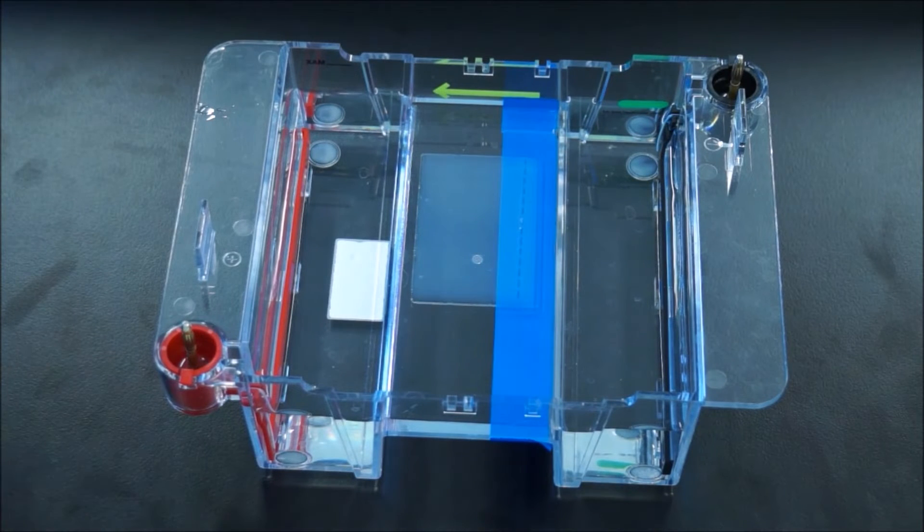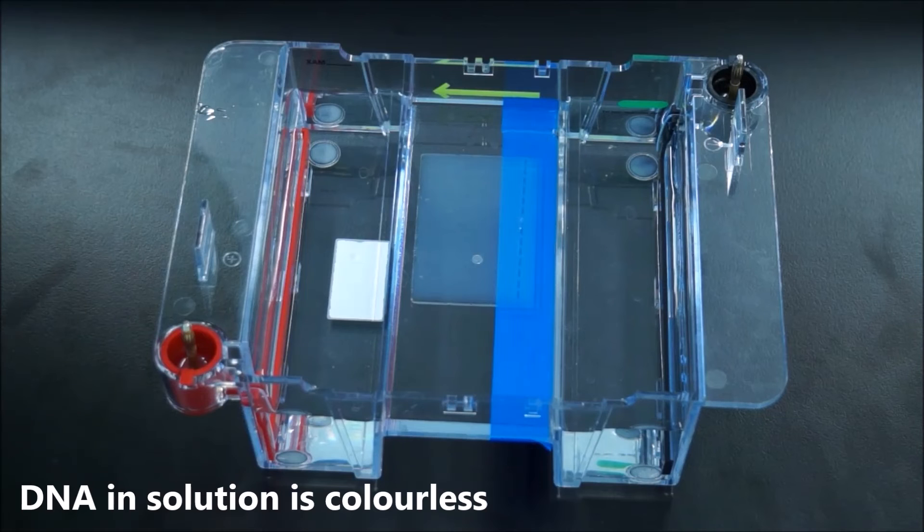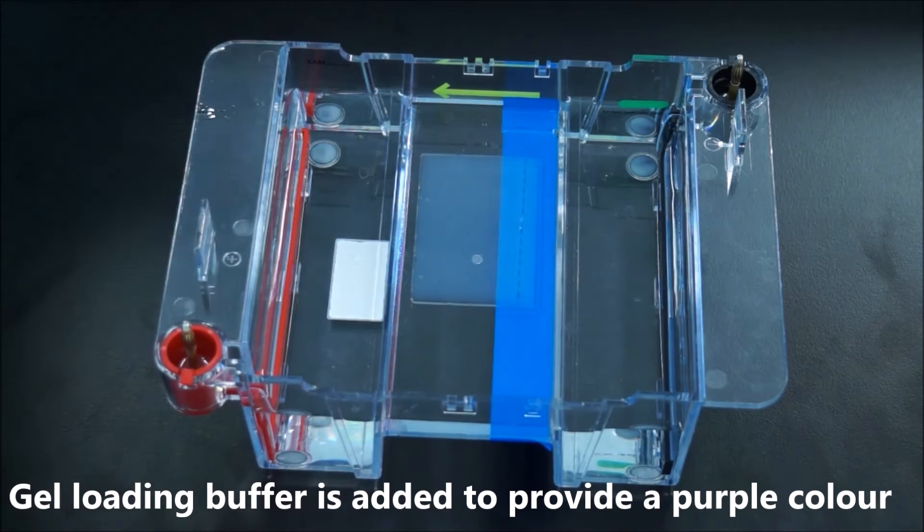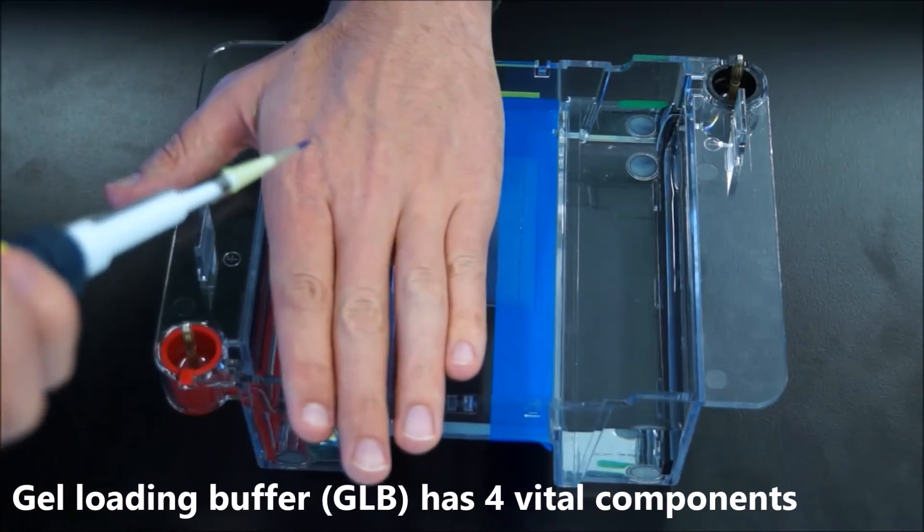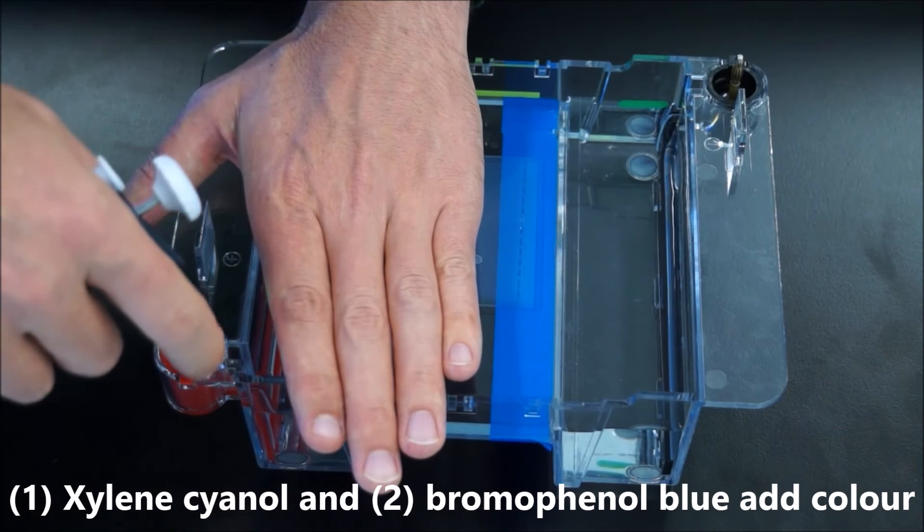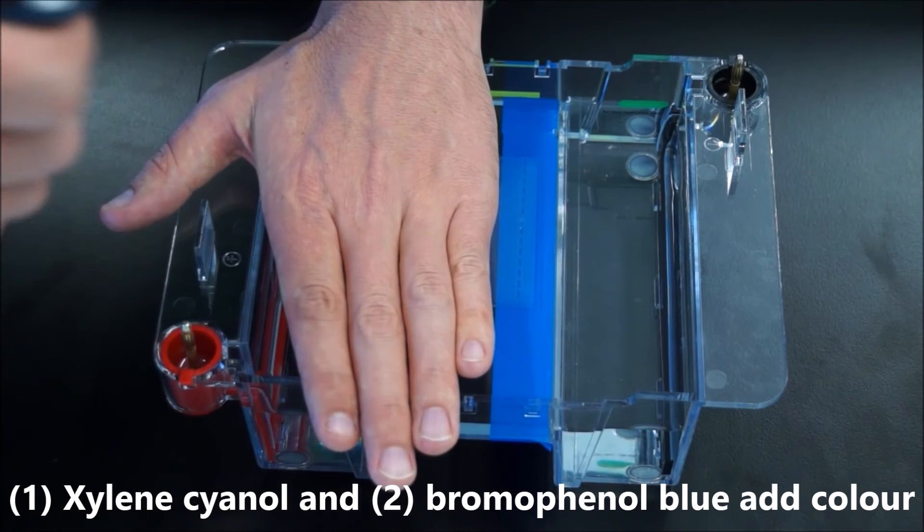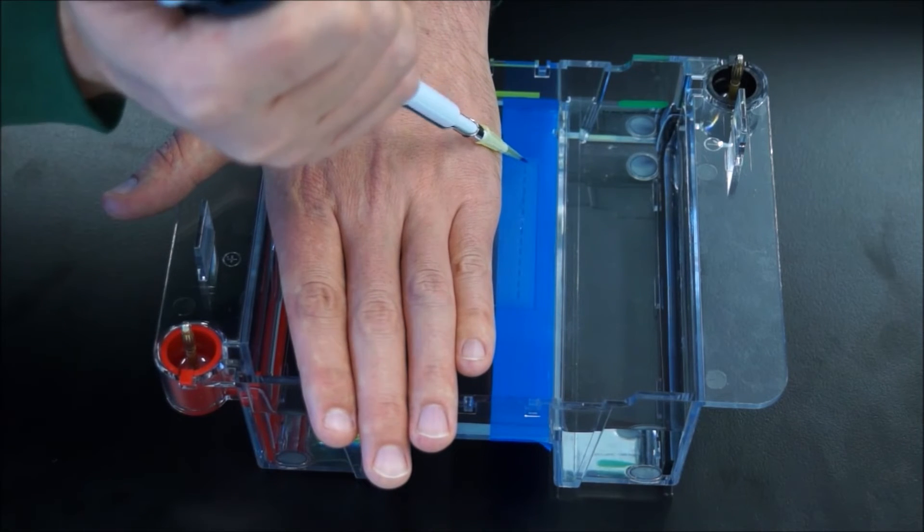Now we'll have to load the gel. There's a couple of tricks here. What I usually do is use my non-pipetting hand and get it as close to the gel as possible. It doesn't have to be pushing down on top of the electrophoresis tank, but it just acts as a place to support your pipetting hand.